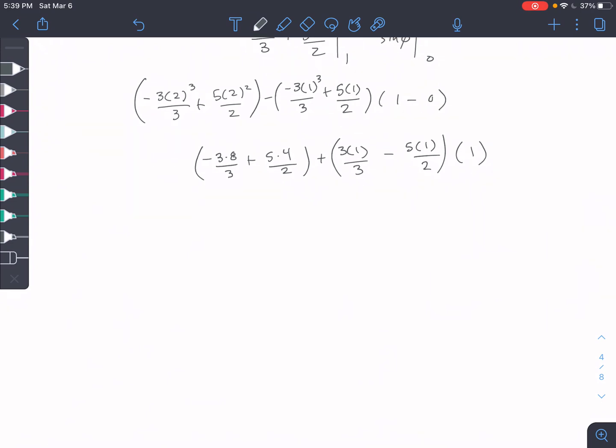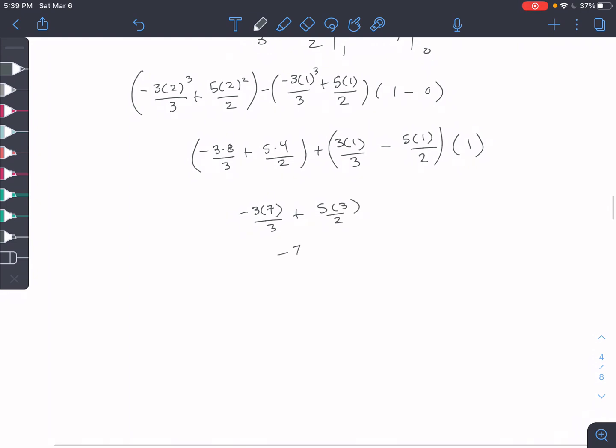Okay. So I'm going to group these guys. So I have minus 3 times 7 over 3 plus 5 times 3 over 2. So I'm going to get minus 7 plus 15 over 2 equals minus 7 plus 7.5, which equals 1 half.